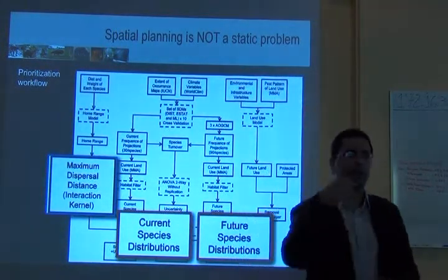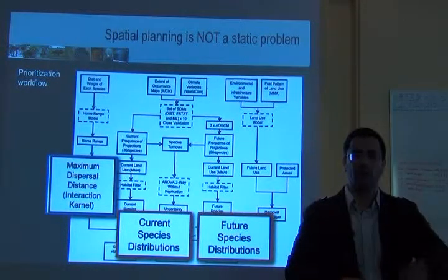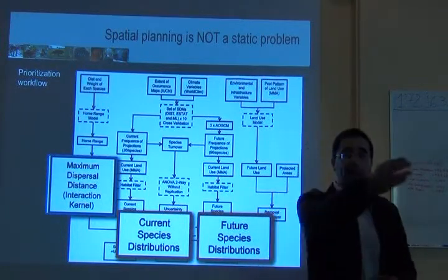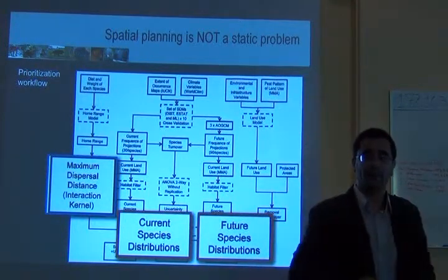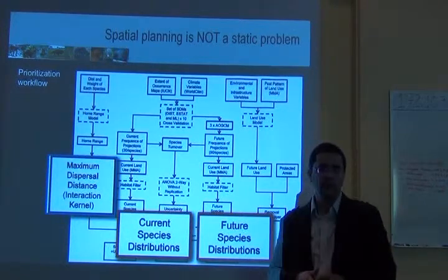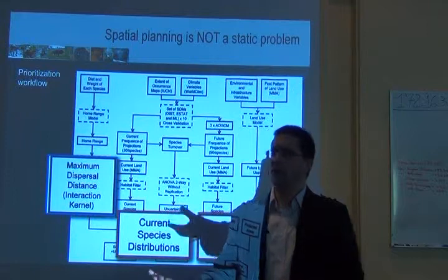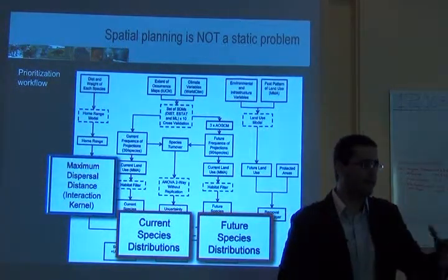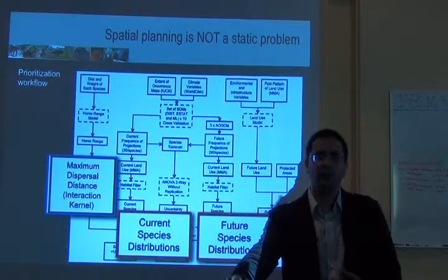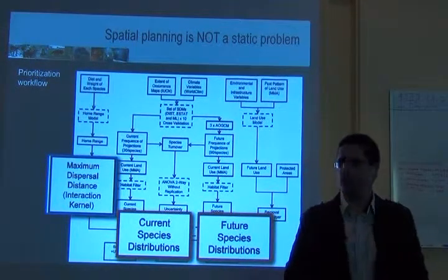I can have climatically suitable areas in one place, but I need to know if the species will be able to get there. That's why I model the maximum dispersal distance — so I can say that even if my ecological niche model identifies a place as suitable, if the species cannot reach it, then that place is useless for conserving the species.